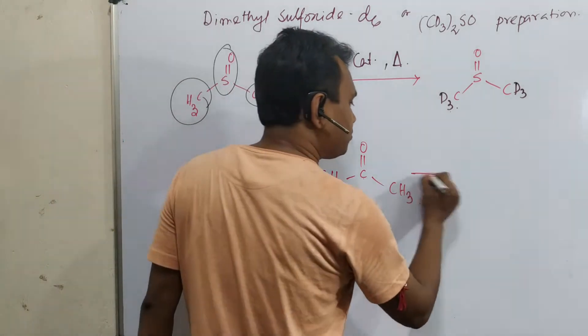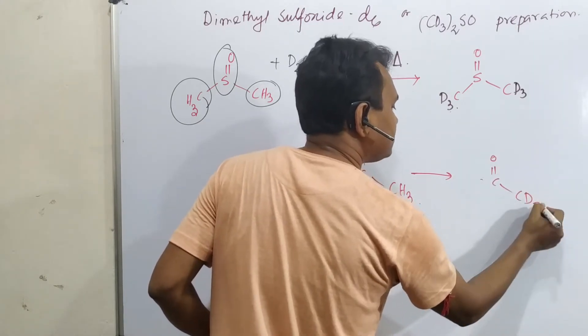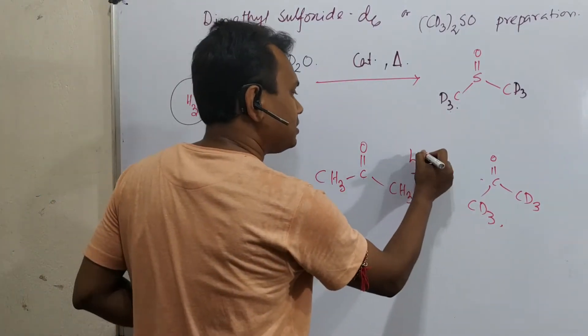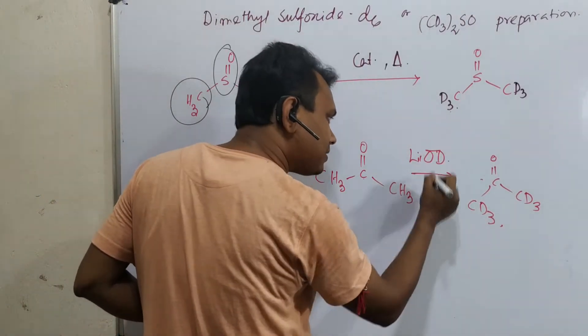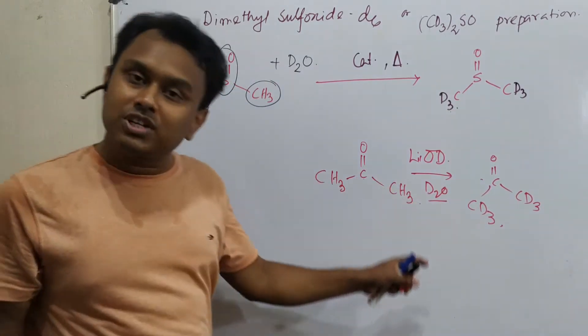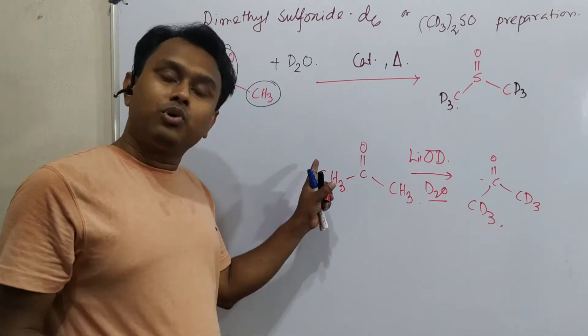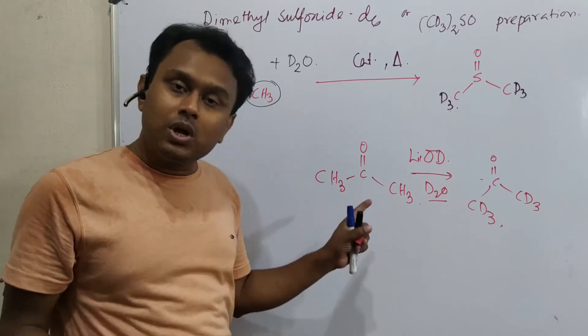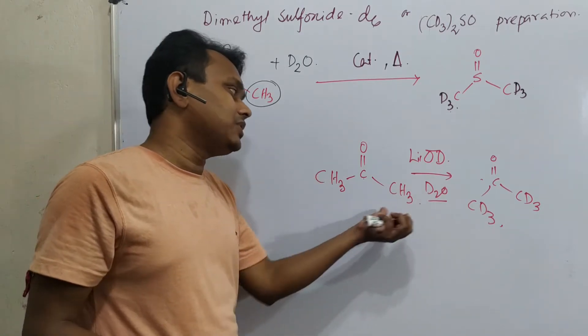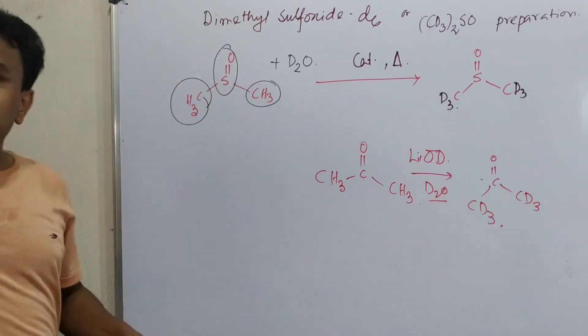I can think about this because I have previously discussed acetone D6 preparation. There I have explained basic catalyst like lithium hydroxide in detail. What happens? First enolate is generated, that is a reversible reaction, and that takes deuterium and this carbon-deuterium bond is relatively stable compared to carbon-hydrogen bond.